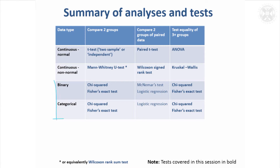For binary and categorical data it's the same thing really — chi-squared tests, Fisher's exact tests. There's the McNemar's test that you can use if you've got paired data, or logistic regression, but I haven't really covered those. For three or more groups you can still use the chi-squared test and Fisher's exact test for both binary and categorical data.